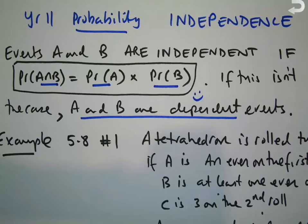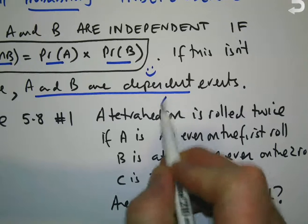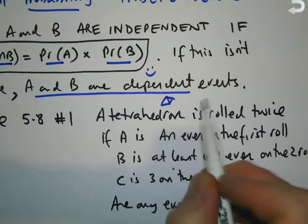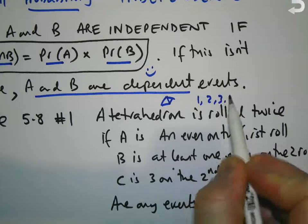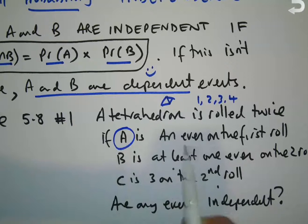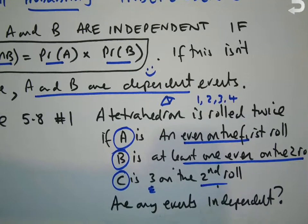I'll take example 5.8 question 1. A tetrahedron is rolled twice. A tetrahedron is a triangular pyramid, so it has four sides — outcomes one, two, three, or four. If rolled twice, four by four gives 16 outcomes. Event A is an even on the first roll. Event B is at least one even on the two rolls. And event C is a three on the second roll.